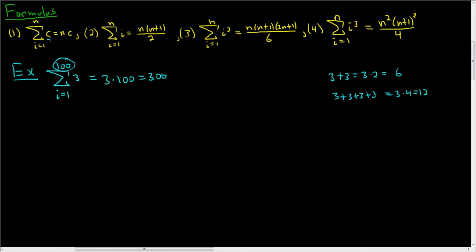Of course, you can just use the formula. Here, c is equal to 3, and it's just n times c. n is 100, so it's just 100 times 3, which is 300. Let's do another one.